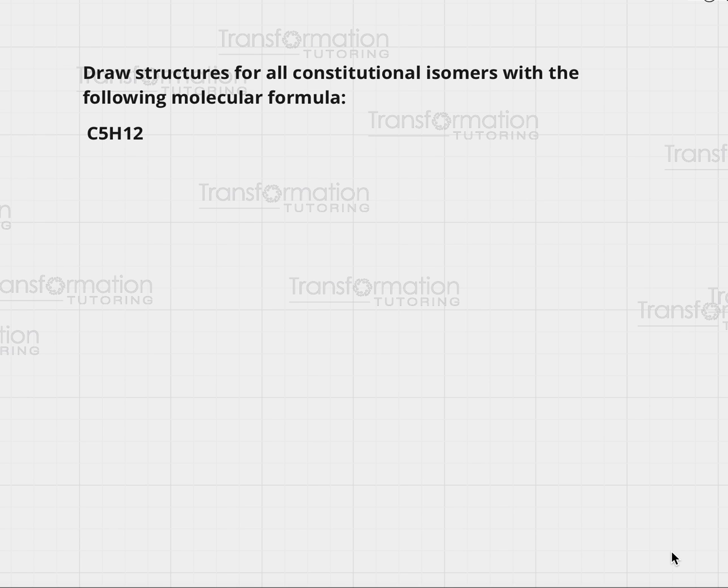So what are constitutional isomers? These are molecules that have the same exact formula but different structure and different connection. In our case our formula is C5H12, with 5 carbons and 12 hydrogens. All of the constitutional isomers must have 5 carbons and 12 hydrogens but they will have a different connection and therefore they will be named differently.